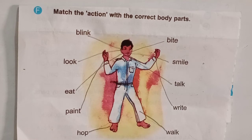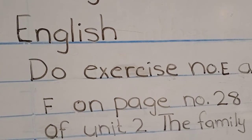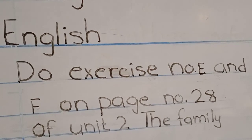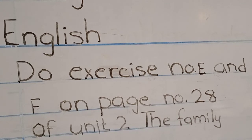I hope children, you understand how to match the action with the correct body parts. You will do this work at home with the guidance of your parents. Now children, take out your diaries and write: Do exercise E and F on page number 28 of unit 2, The Family. You will do both exercises at home with the guidance of your parents. Thank you, take care and Allah Hafiz.